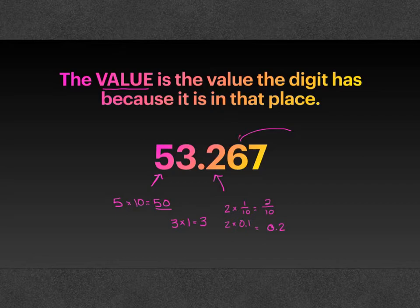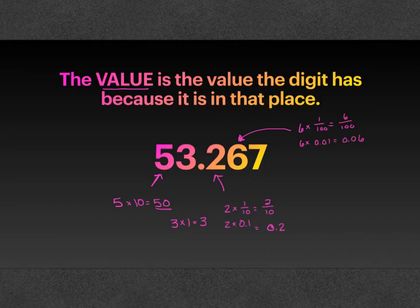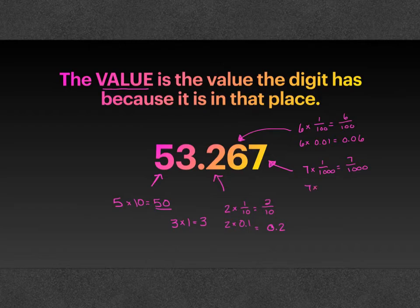If you're looking for the six, it is a six in the hundredths place, so it has a value of six hundredths, and as a fraction it would be written like that. As a decimal, it would be written like this. And if you're looking for the value of the seven, it is a seven in the thousandths place, so it would have a value of seven thousandths. As a fraction it's written that way, and as a decimal it is written like this.